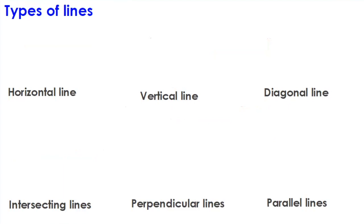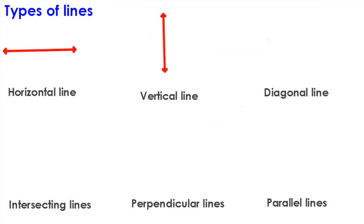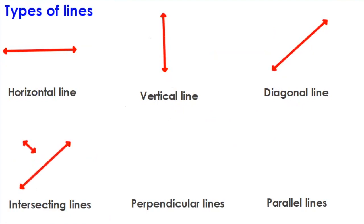Let's quickly recap all the different types of lines. A horizontal line is like an x-axis — you draw the line from left to right. A vertical line is like a y-axis — it's an up and down line. Diagonal lines go at an angle, and intersecting lines are two lines meeting at the same point. Perpendicular lines are a special type of intersecting lines where two lines meet at a right angle, so all angles around the perpendicular line are 90 degrees.